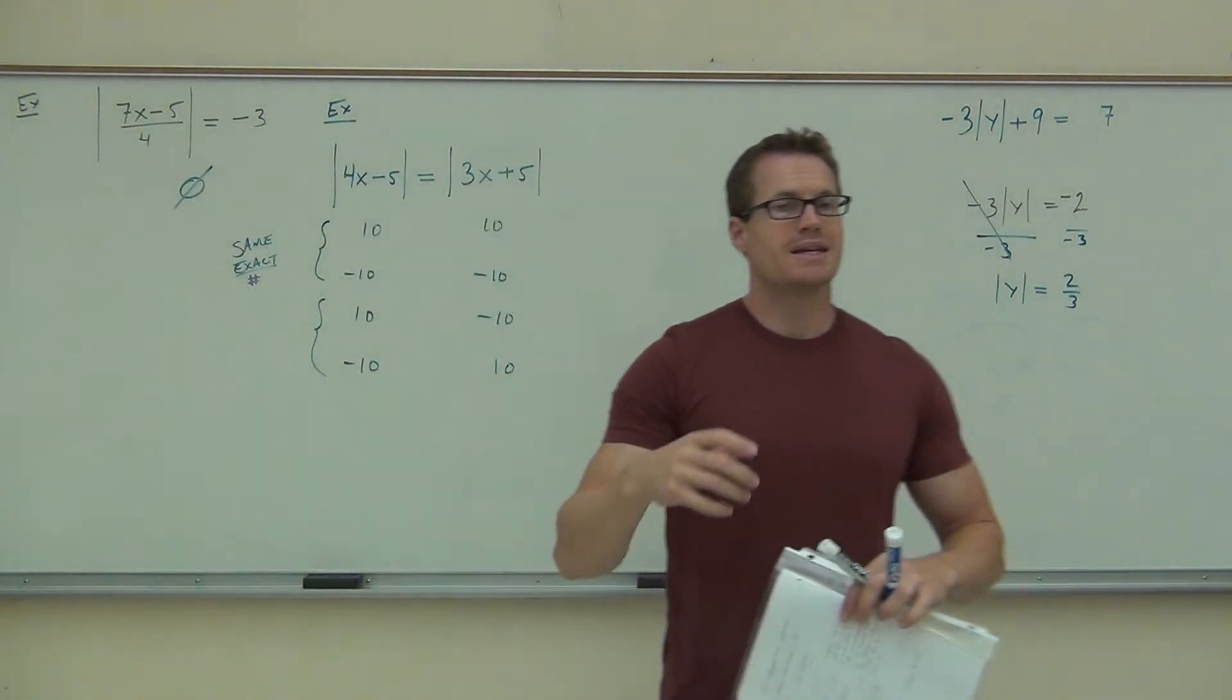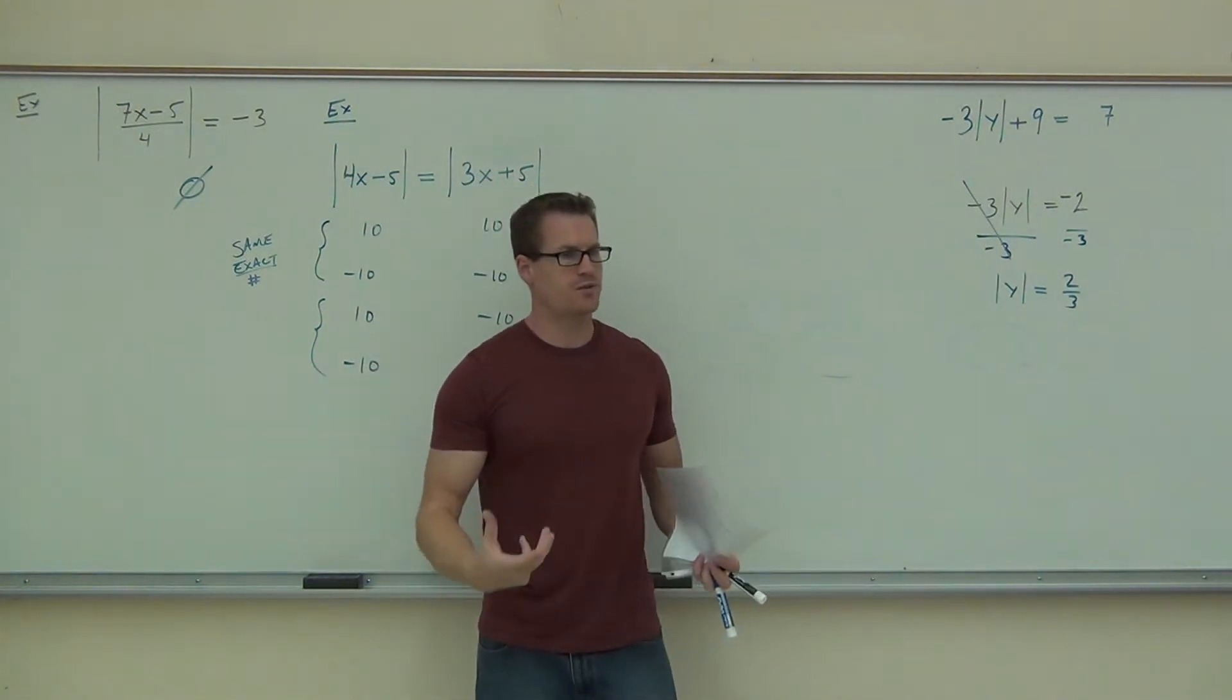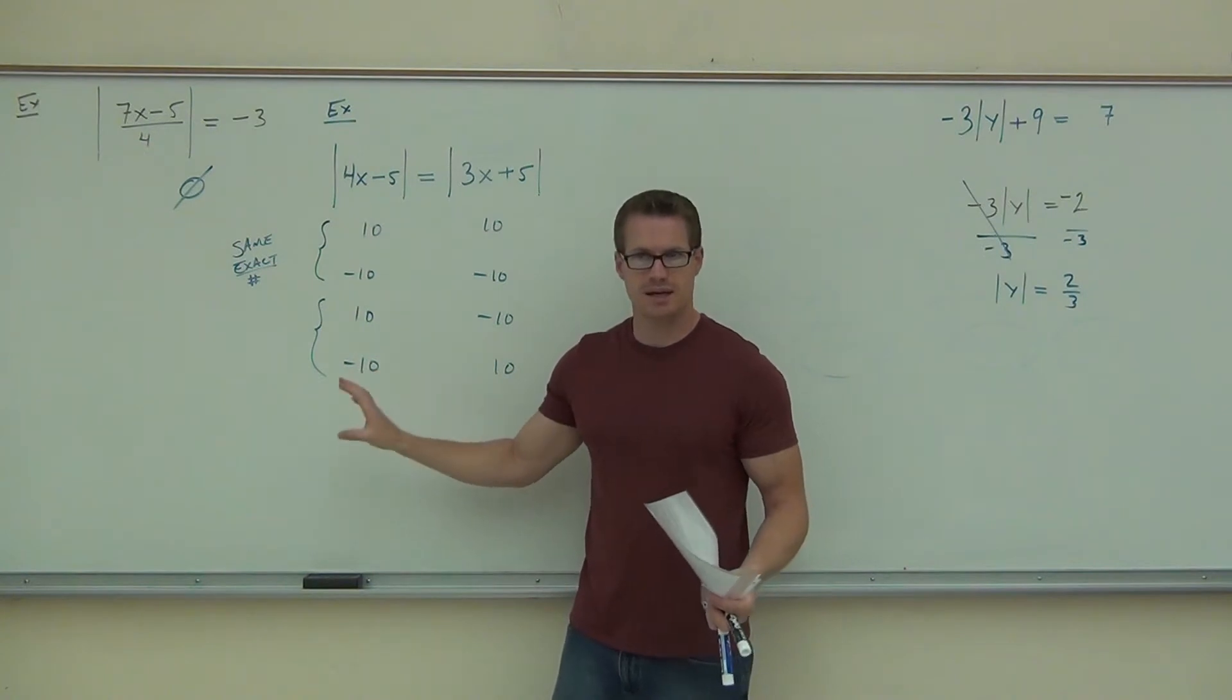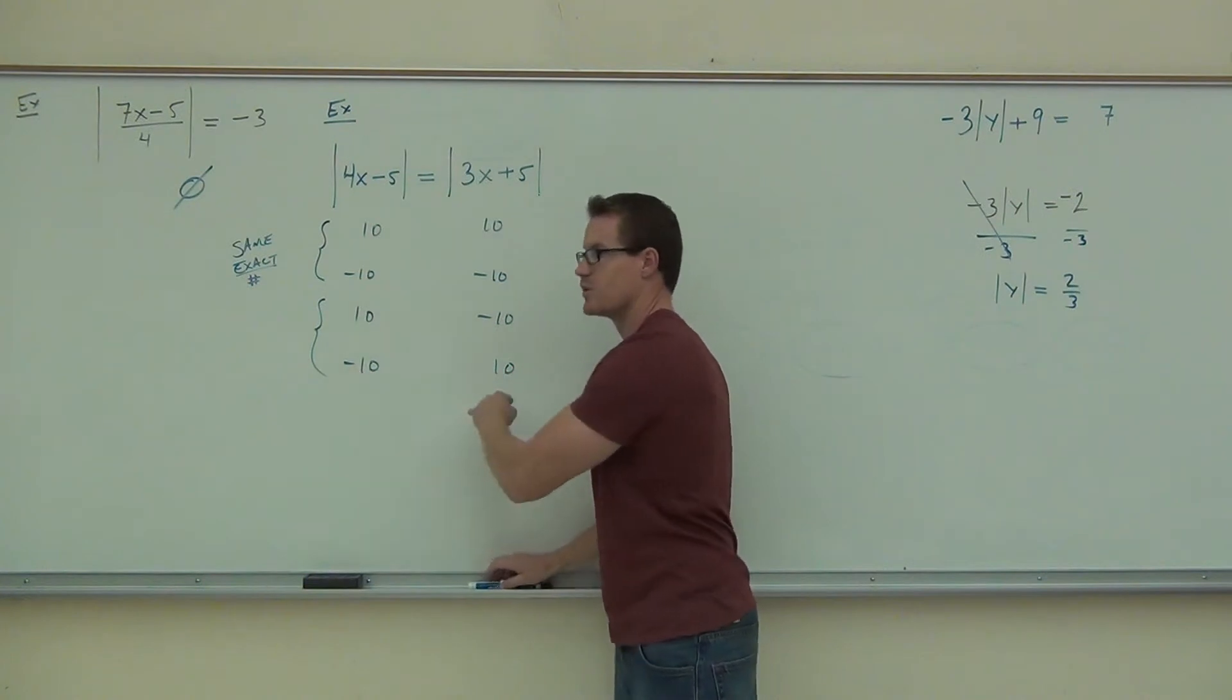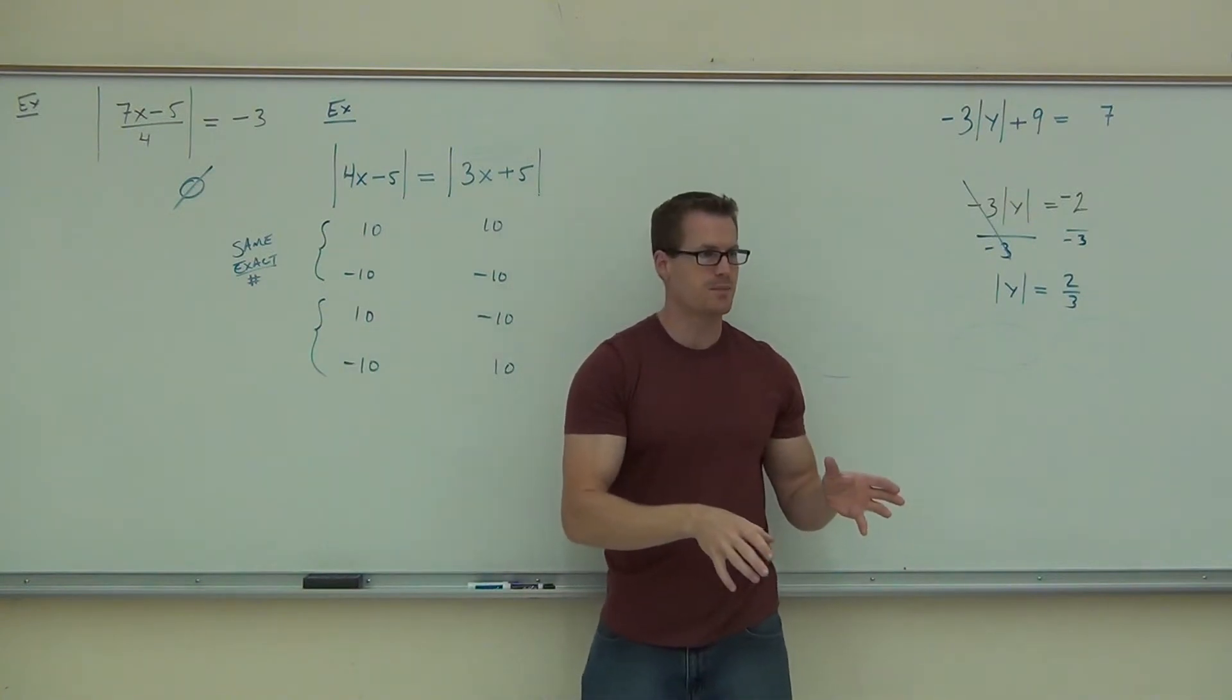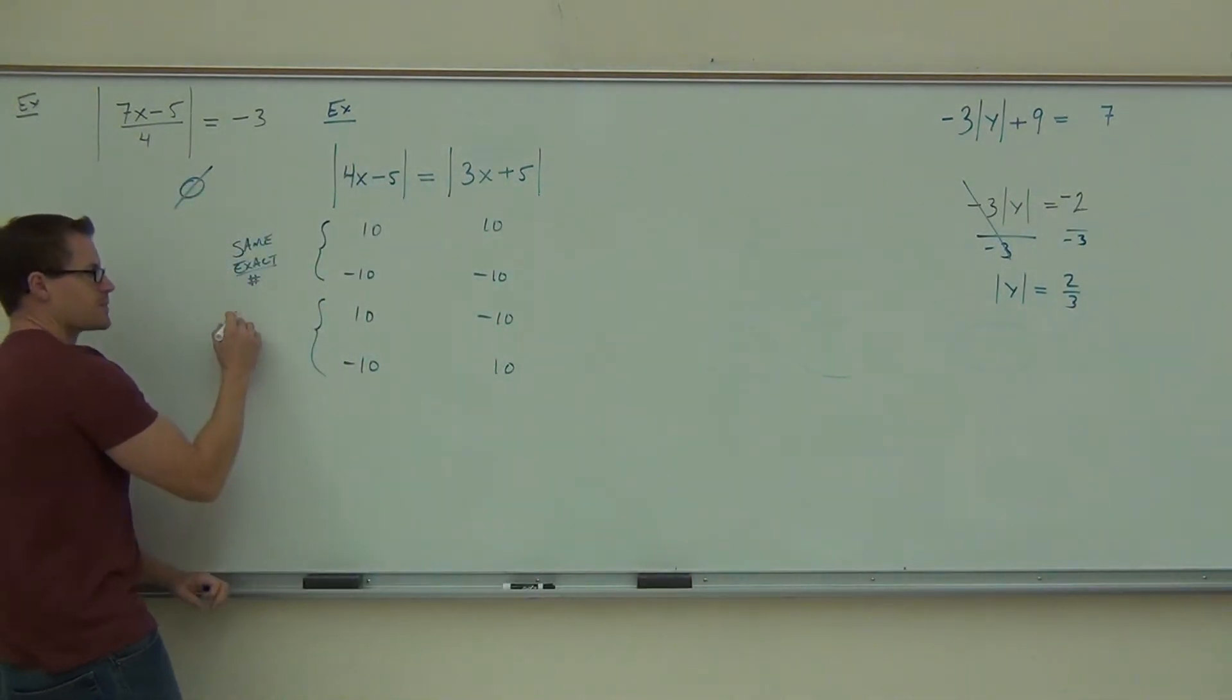Case two. Case two is the case where the insides are opposite each other. However, when you take the absolute value, it doesn't matter, because it's going to make everything positive no matter what. Do you see that case? So even though they're opposite numbers, one's 10, one's negative 10. One's negative 10, one's 10. Even though they're opposite numbers here and opposite numbers here, it doesn't matter. The absolute value will make them positive, and therefore you will have an equation in this case. So first case is the exact number. Second case, opposite numbers.